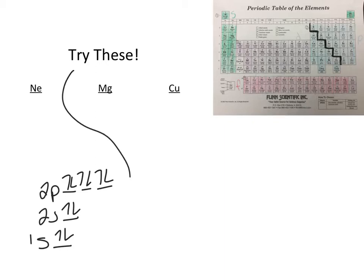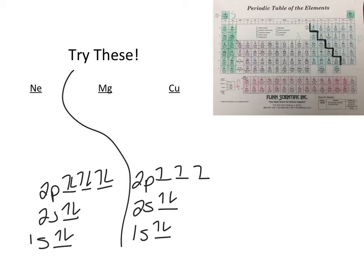Now let's do magnesium. So I start off the same way. 1S, one orbital, two electrons, 2S, one orbital, two electrons, 2P, three orbitals, six electrons. And then I am finally done in my 3S, one orbital, two electrons. And that's magnesium.